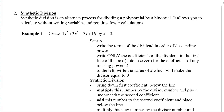Let's take a look at this example where we have a polynomial divided by x minus 3. We're going to first write the terms of the dividend in order of descending power. In this case, it's already in descending order: x cubed, then squared, then a power of 1, and then a constant. We write only the coefficients, using 0 for any missing powers. Here we have 3, 2, 1, and 0, so no missing powers.